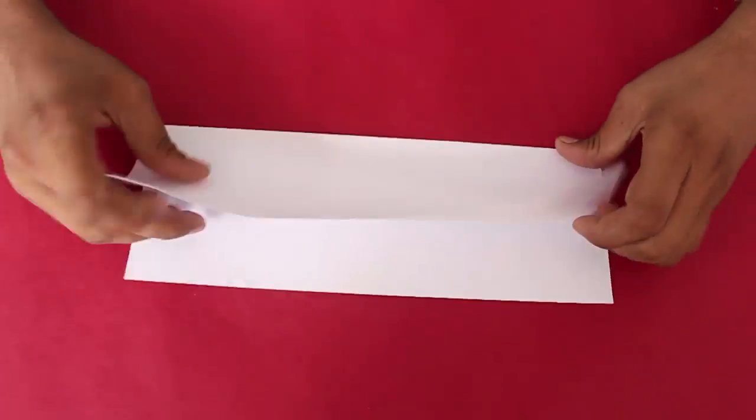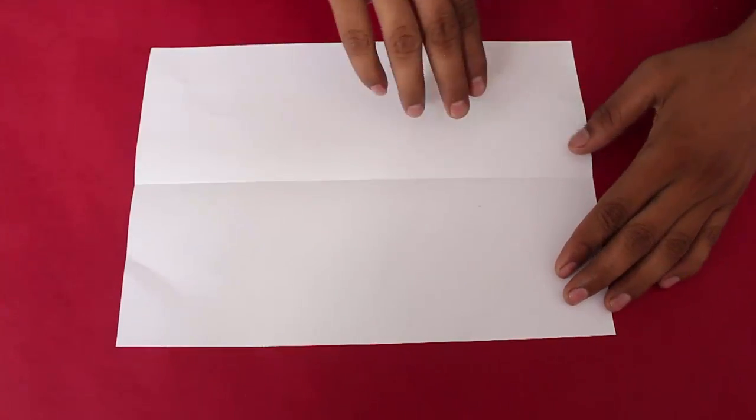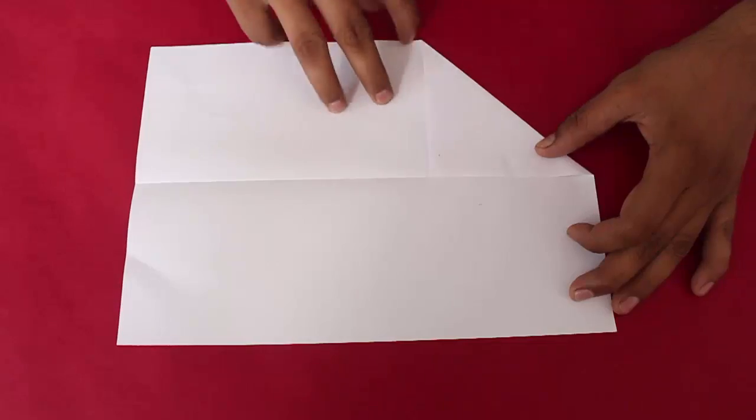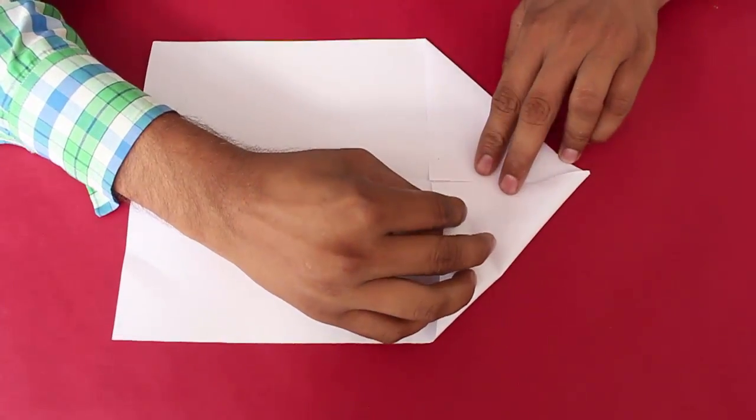Then open and fold two triangles on the right hand like a fat arrow.